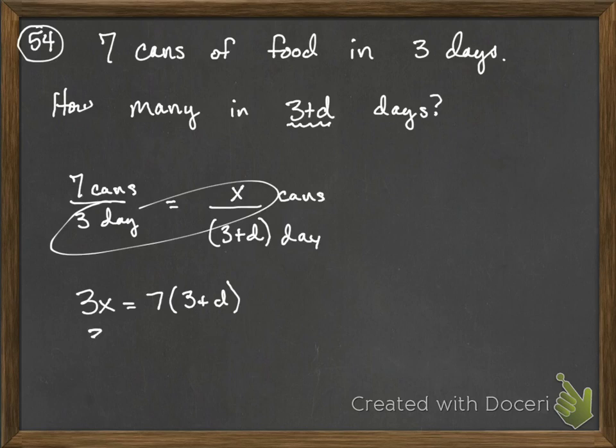Alright, if we do this, that's 3x equals 21 plus 7d. Okay, and we divide by three here.